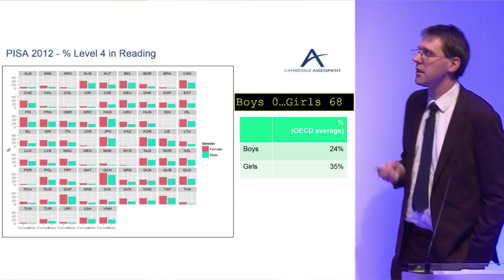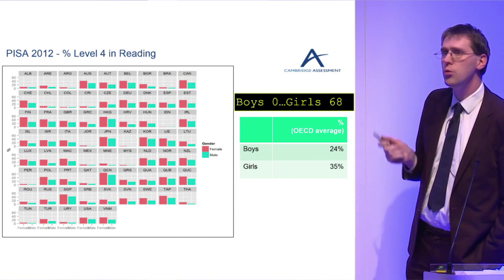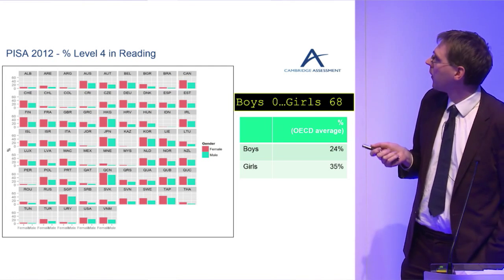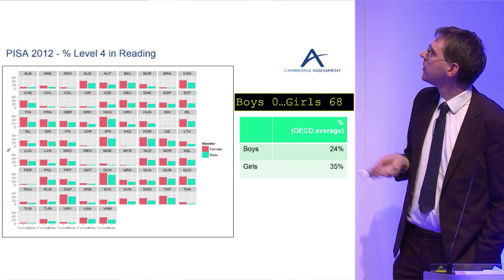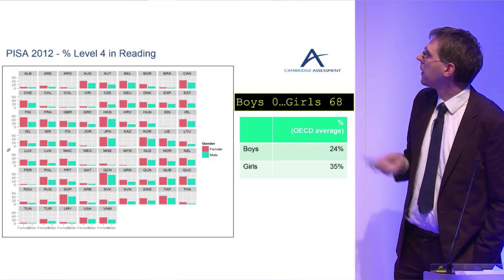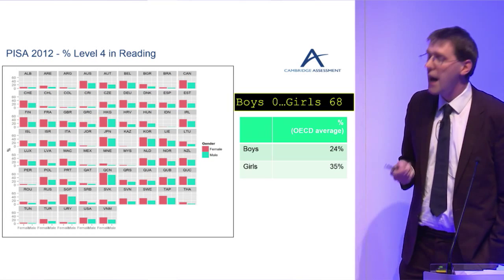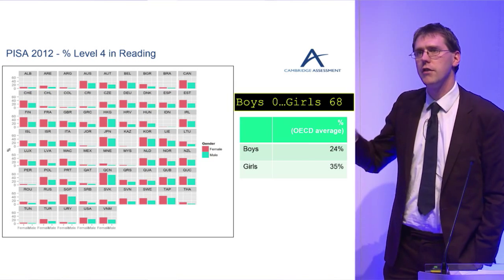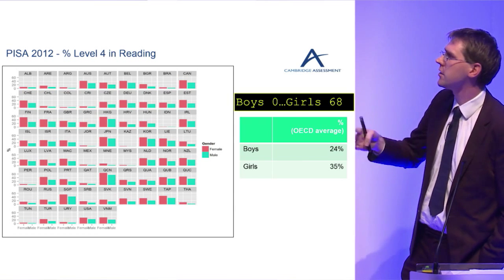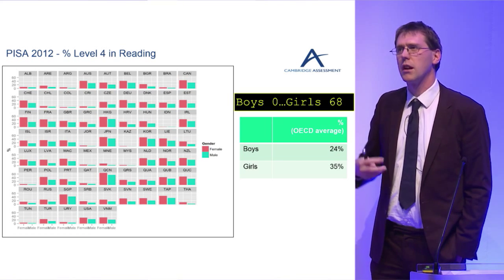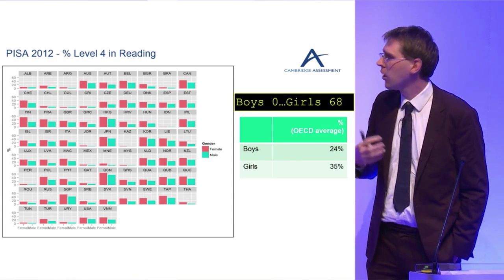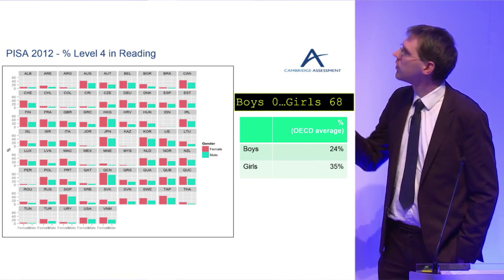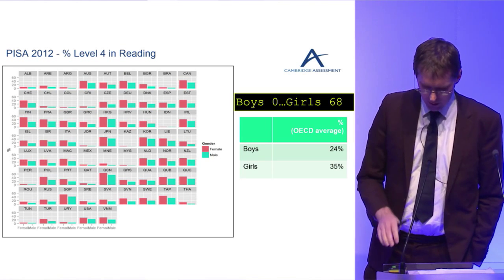The biggest difference in attainment comes in reading, where girls universally outperform boys in every single country on the planet — high performers and low performers alike. When expressed in PISA point scores, the average difference is close to 40 points, which is interpreted as roughly a year's worth of schooling. The biggest difference is in reading.